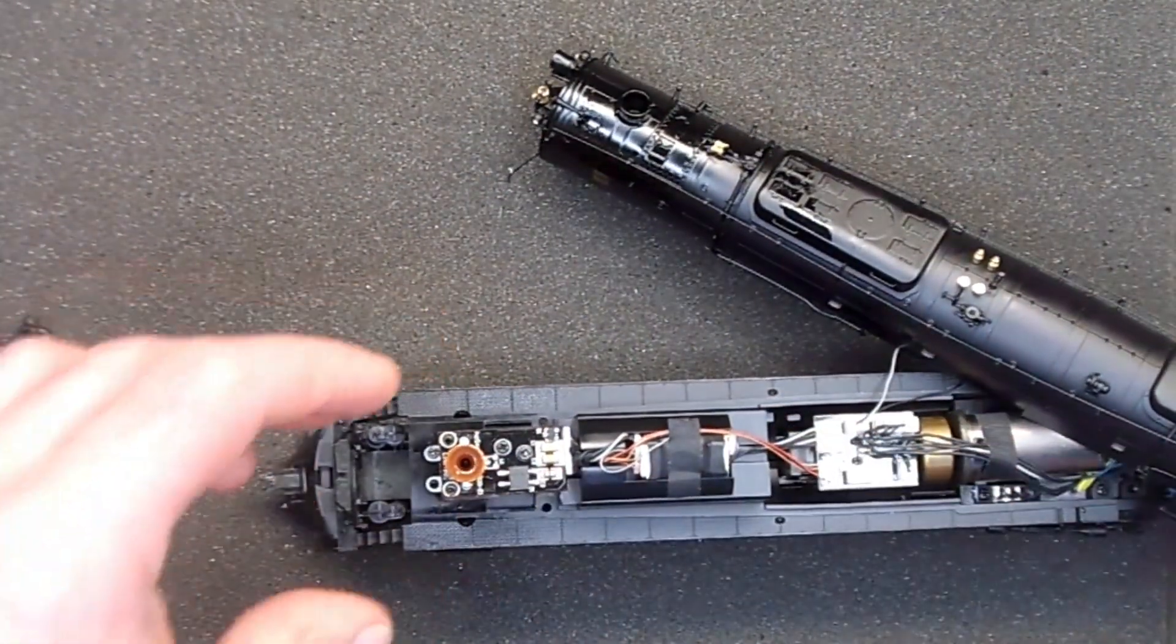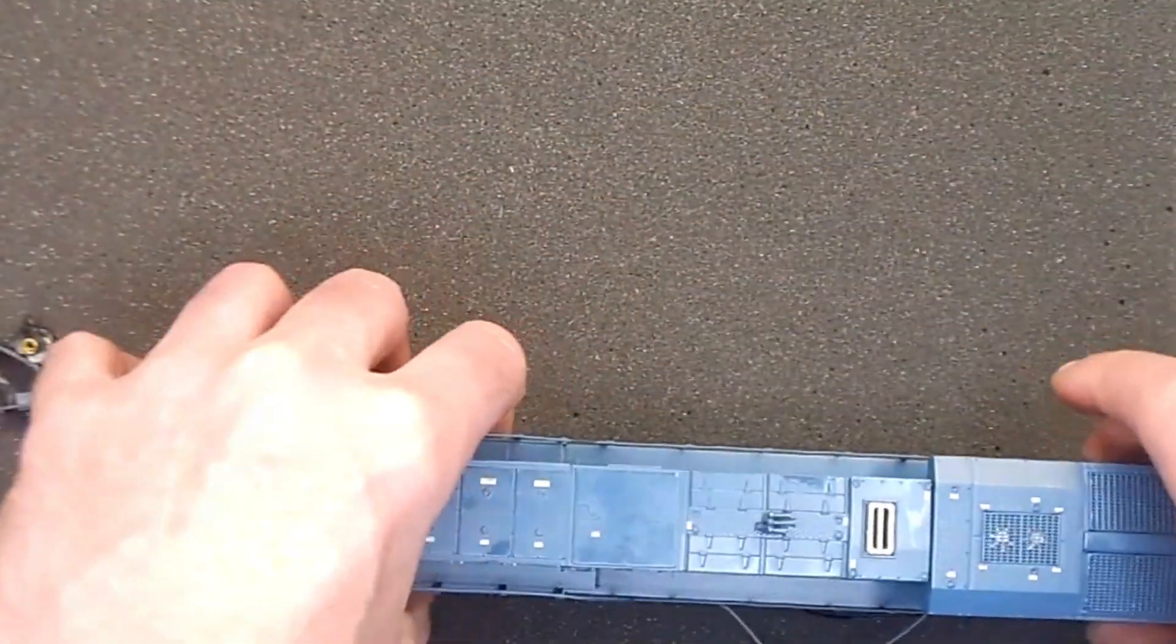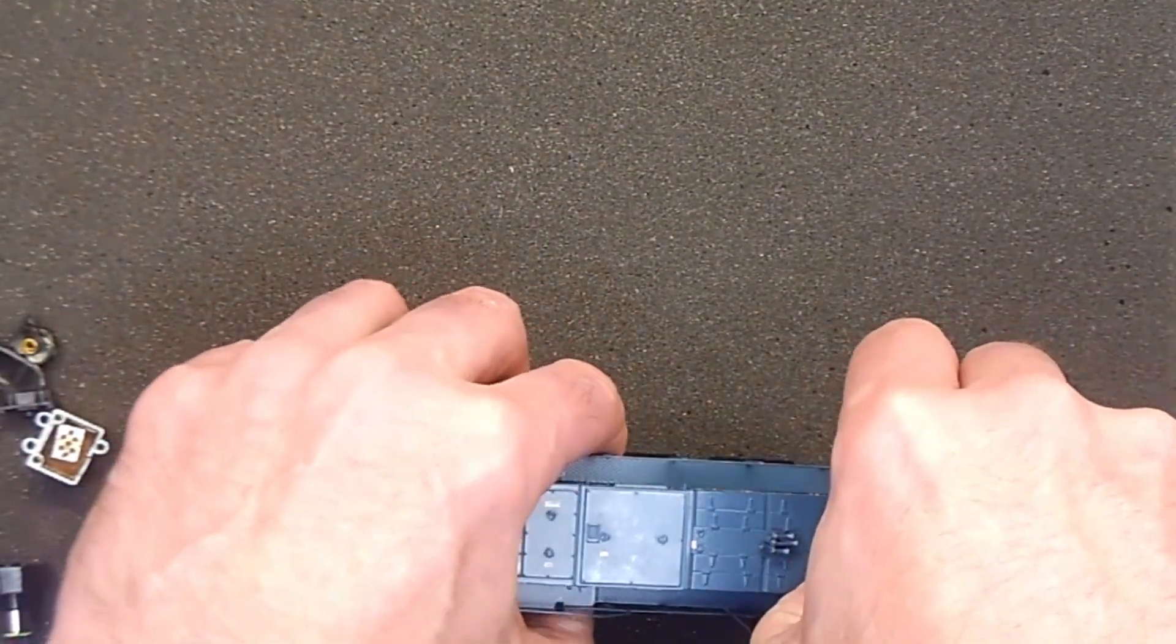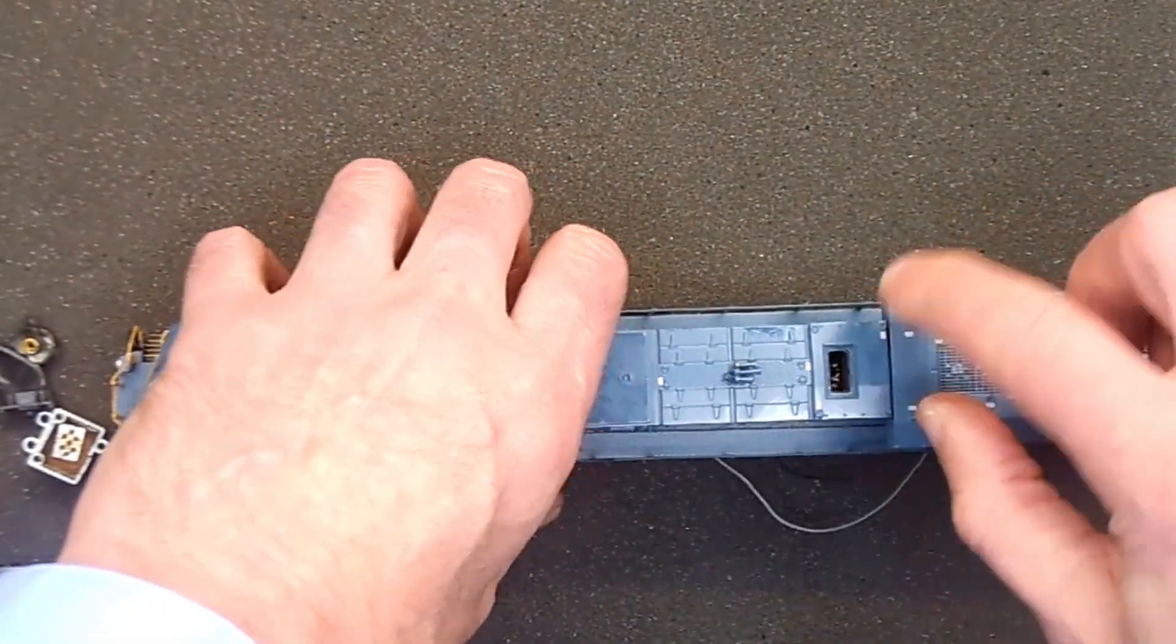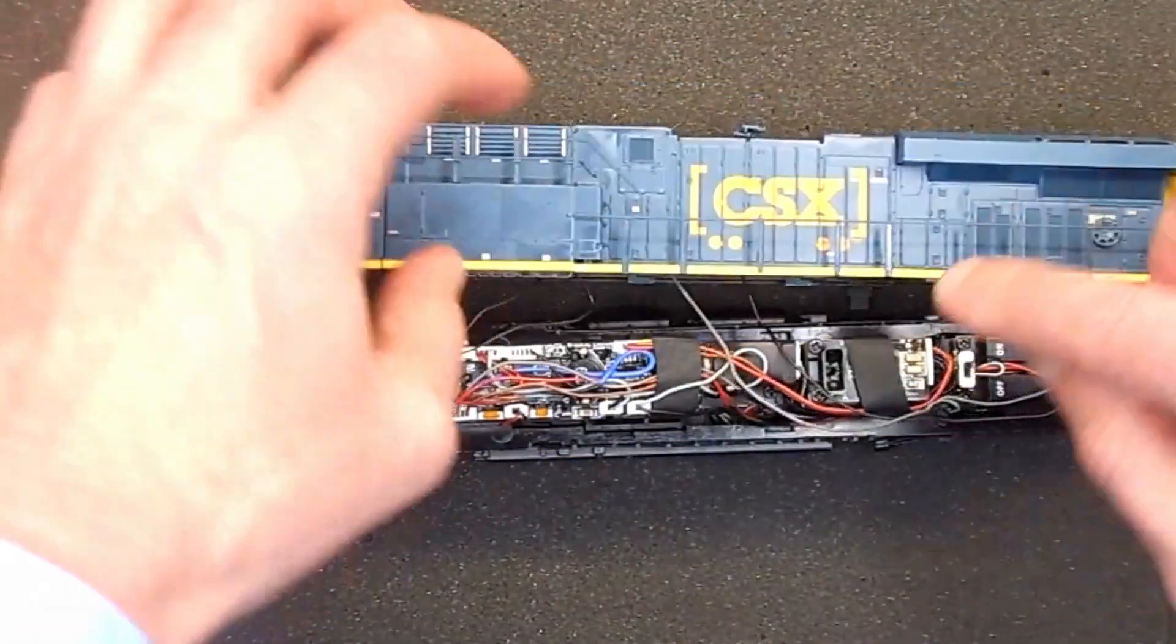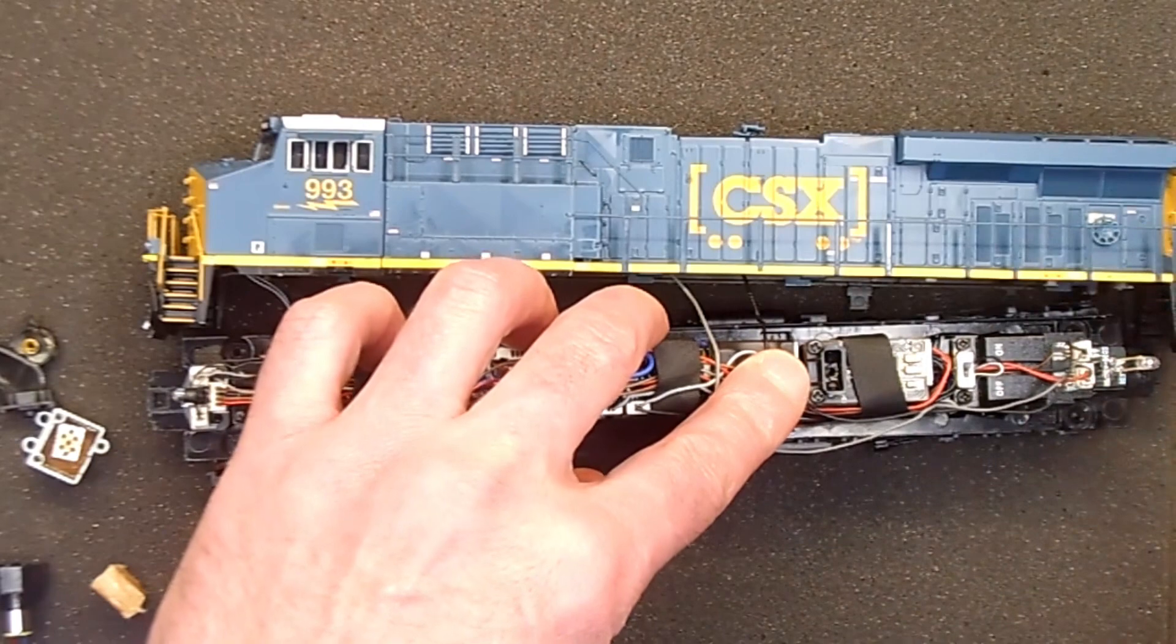A diesel, same procedure. Usually a diesel is going to have one or two exhaust ports. If it has two, you can go down either one; it's all going to go to the same place. As you can see here, it's just one rectangle with a hole in the middle that lets the smoke fluid flow down into there.